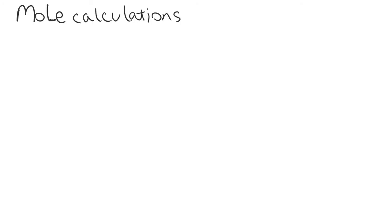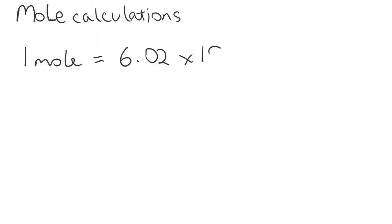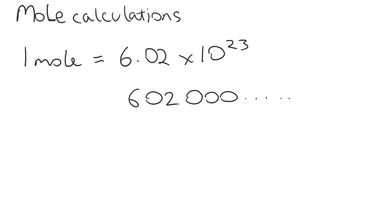In this video we're going to look at mole calculations. So what is a mole? A mole is a chemical unit for the amount of a certain substance — any substance. Essentially it's just a number; it's what we call Avogadro's number. So one mole of any substance is equal to 6.02 times 10 to the power of 23 — that's a 6.02 with 21 zeros after it — number of particles. It's just an incredibly large number.